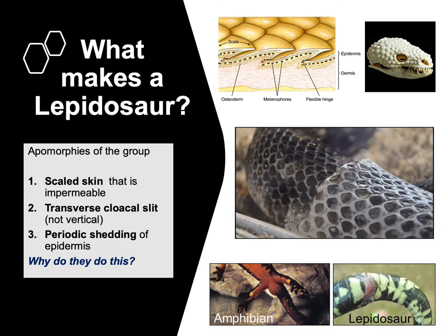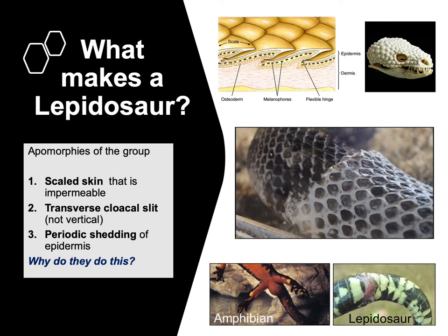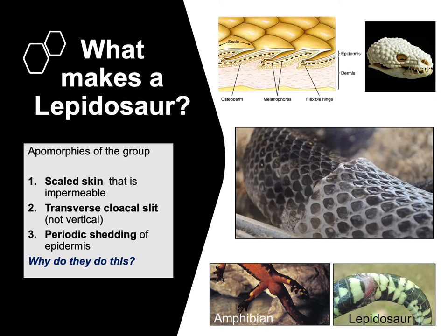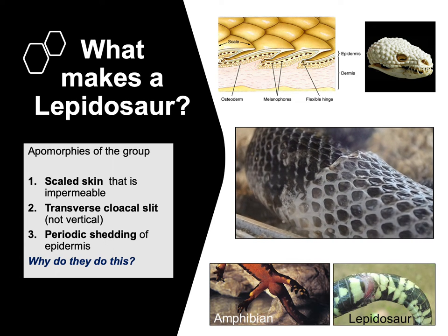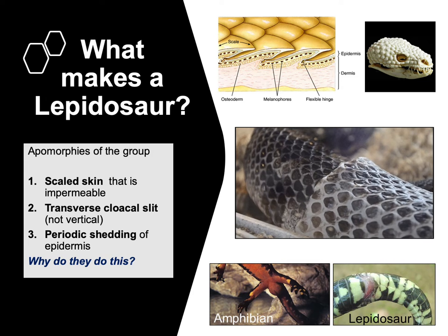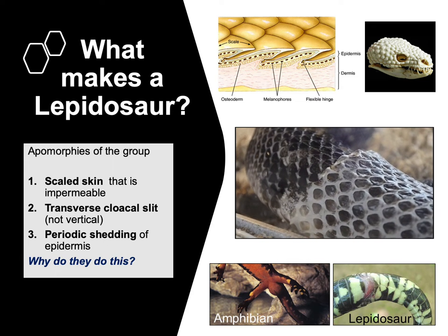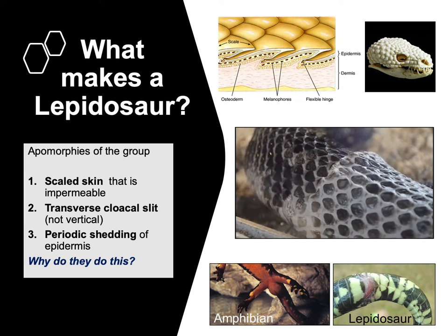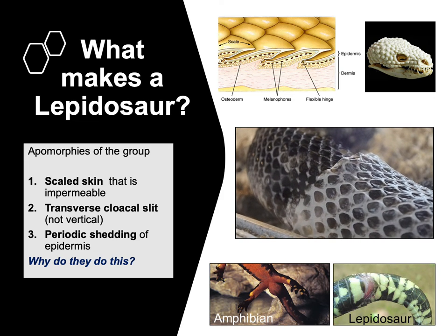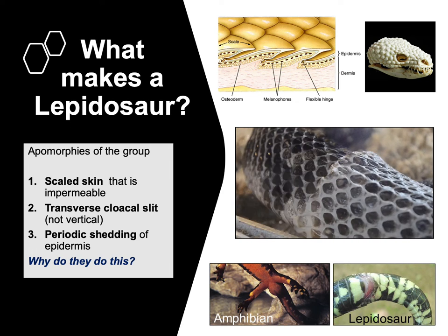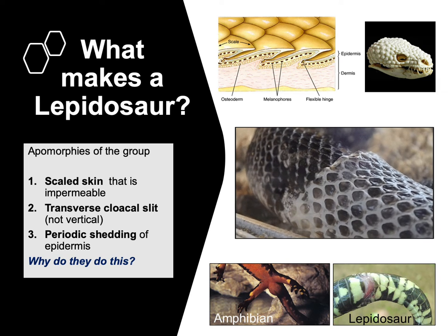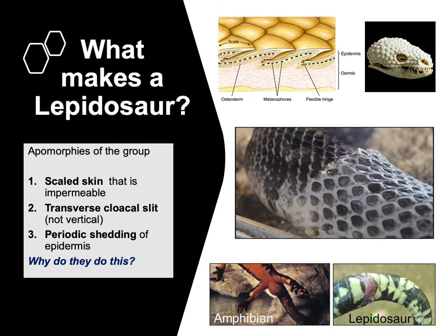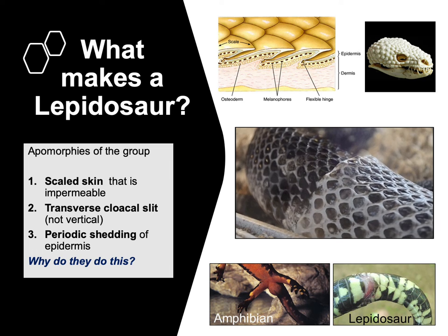The second trait is they have a cloaca, but unlike the cloaca of an amphibian which runs longitudinally along the axis of the body, the cloaca in a lepidosaur is transverse — not vertical, but horizontal across the body. There's a picture showing a newt in the water where you can see the cloaca as a little slit; in lepidosaurs, it runs across the body.